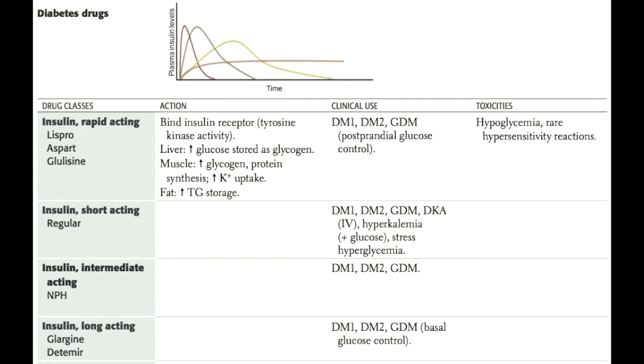Let's start by reviewing the different types of injectable insulin patients may use. As you can see from the graph and the table on this slide, there are 4 categories of insulin, organized by onset and duration of action. The three rapid-acting insulin formulations are Glulisine, Aspart, and Glispro. The way I remember these drugs is by using the mnemonic LAG, since they are fast-acting and these do not lag.